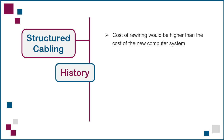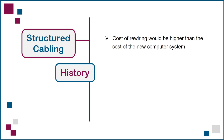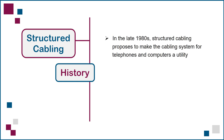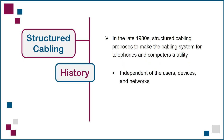In larger buildings, the cost of the rewiring would be higher than the cost of the new computer system, not to mention the disruptions and inconveniences of opening up the ceilings, walls, and floors to run the new cables. So along comes structured cabling in the late 1980s, with the proposal to make the cabling system for telephones and computers a utility, like water and electricity — a standard resource that would be independent of who the users were, what types of phones and computers they wanted to connect, and what types of networks they wanted to use.